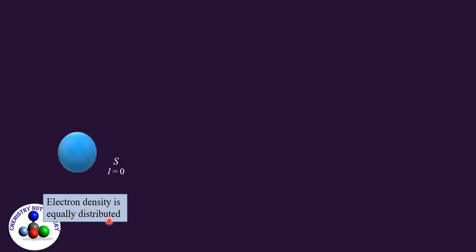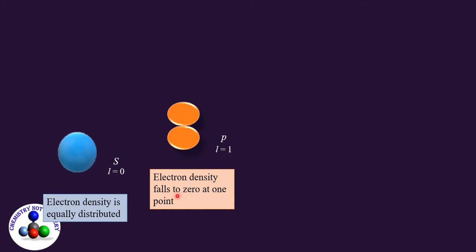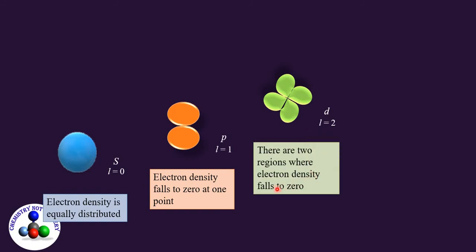We can conclude the shielding efficiency of s orbital is the maximum. p orbital is dumbbell shaped and the value of l is equal to one. That means there is one node. Its shielding efficiency is lesser than the s orbital. d orbital is double dumbbell shaped and the value of l is equal to two. That means there are two nodes. So its shielding efficiency is less than the p orbital.